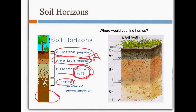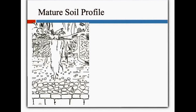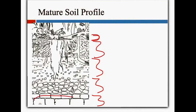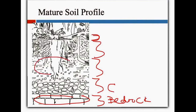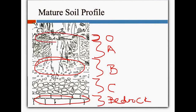Where would you find the humus? Hopefully you would say right here in the organic layer, because that's where dead plants and things like that tend to be. This should look very similar to the diagram on your paper. Starting from the bottom: the bricks are always our bedrock. One step up, our partially weathered bedrock is our C horizon. Our roots are here, we've got leaching going on, lots of minerals — that's our B layer. Here's our A layer or topsoil. And then we have our O layer where all of our organic matter will be.